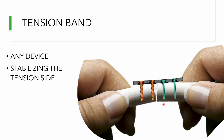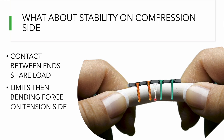If bending is attempted, the cortices on the compression side match and make contact with each other. On the tension side, the fixation device's strength prevents further distraction, and further bending of the device does not occur because of the compression on the other side — making it an inherently stable construct.